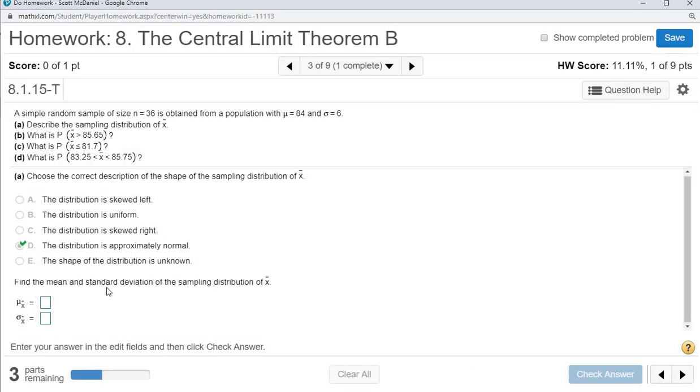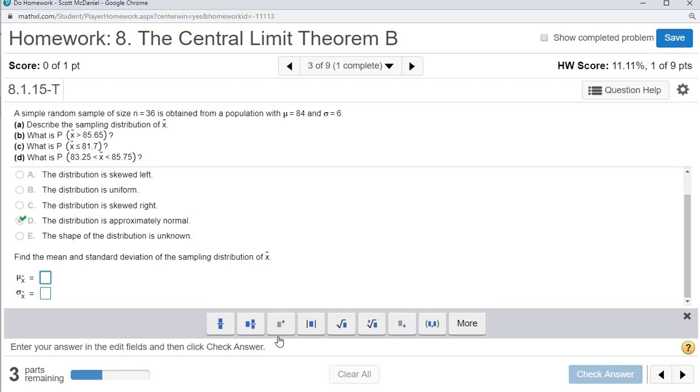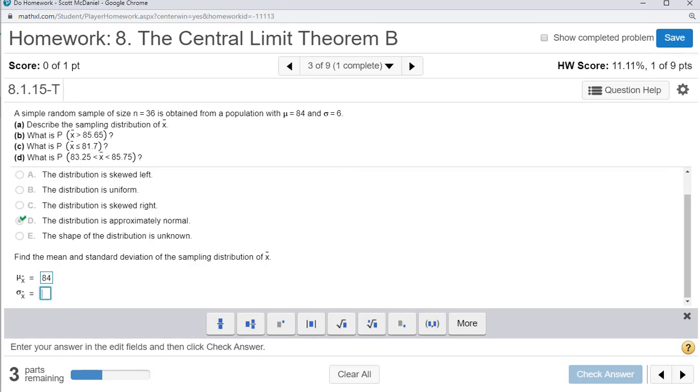Now find the mean and standard deviation of the sampling distribution. Recall that the mean is just the mean, so the mean of the sample X bar is 84. And the standard deviation of X bar, recall, is 6 divided by the square root of n. In this case, it's 6 divided by the square root of 36, and that comes out nice. You're just going to get 1.